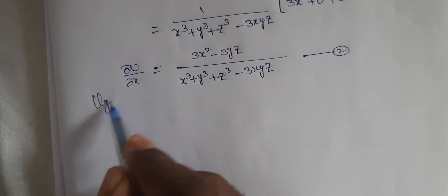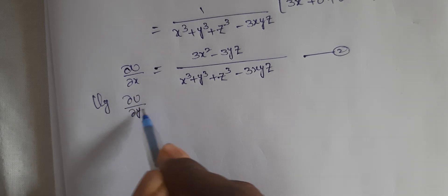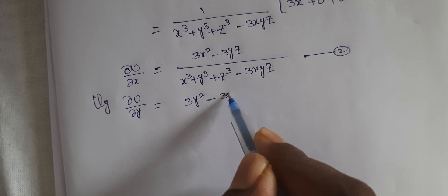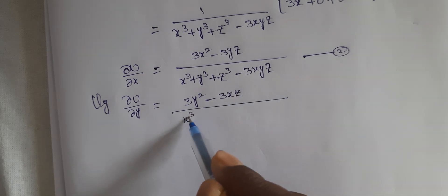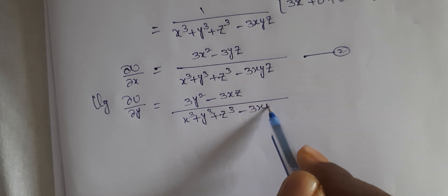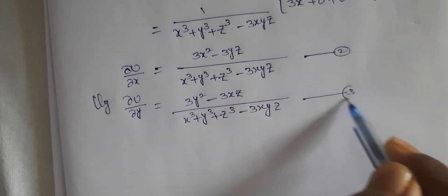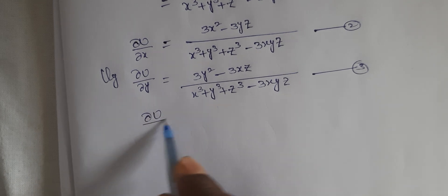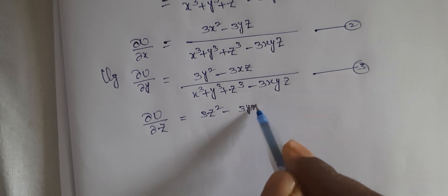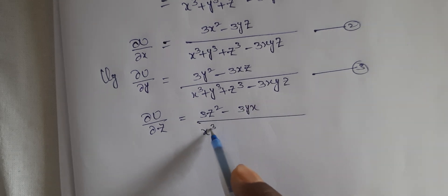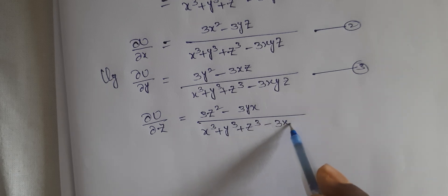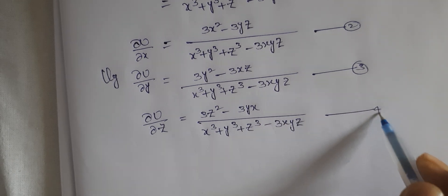Similarly, ∂u/∂y = (3y² − 3xz) by (x³ + y³ + z³ − 3xyz), equation number 3. And ∂u/∂z = (3z² − 3yx) by (x³ + y³ + z³ − 3xyz), equation number 4.